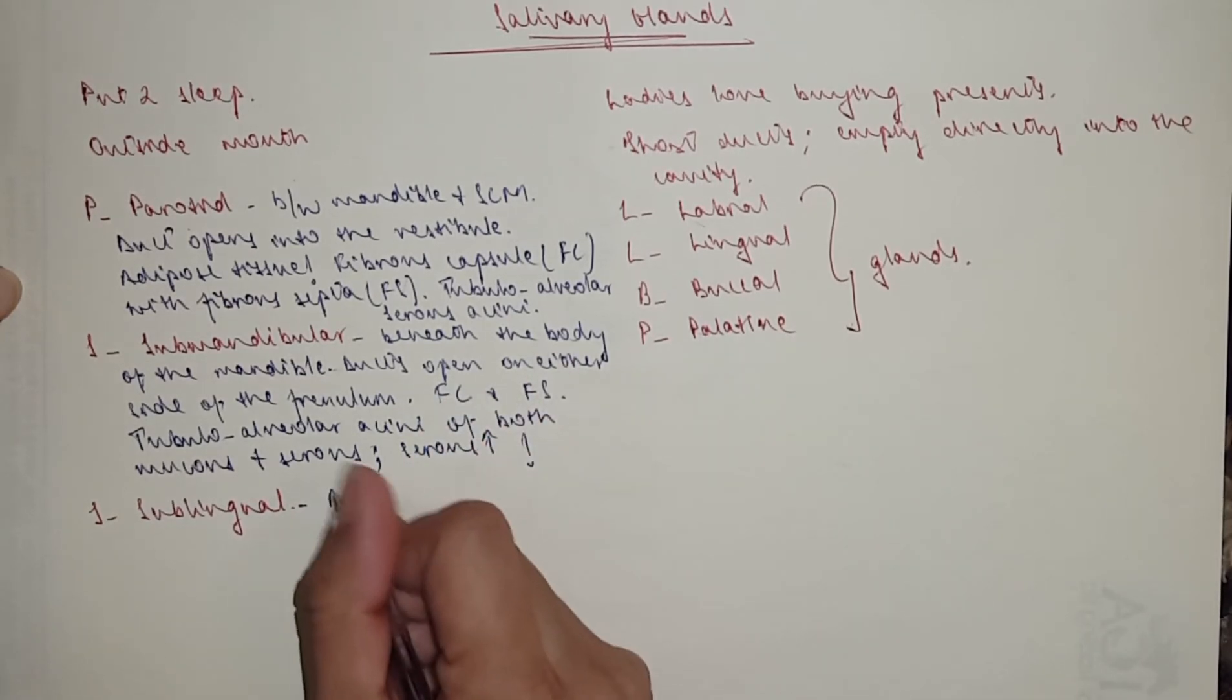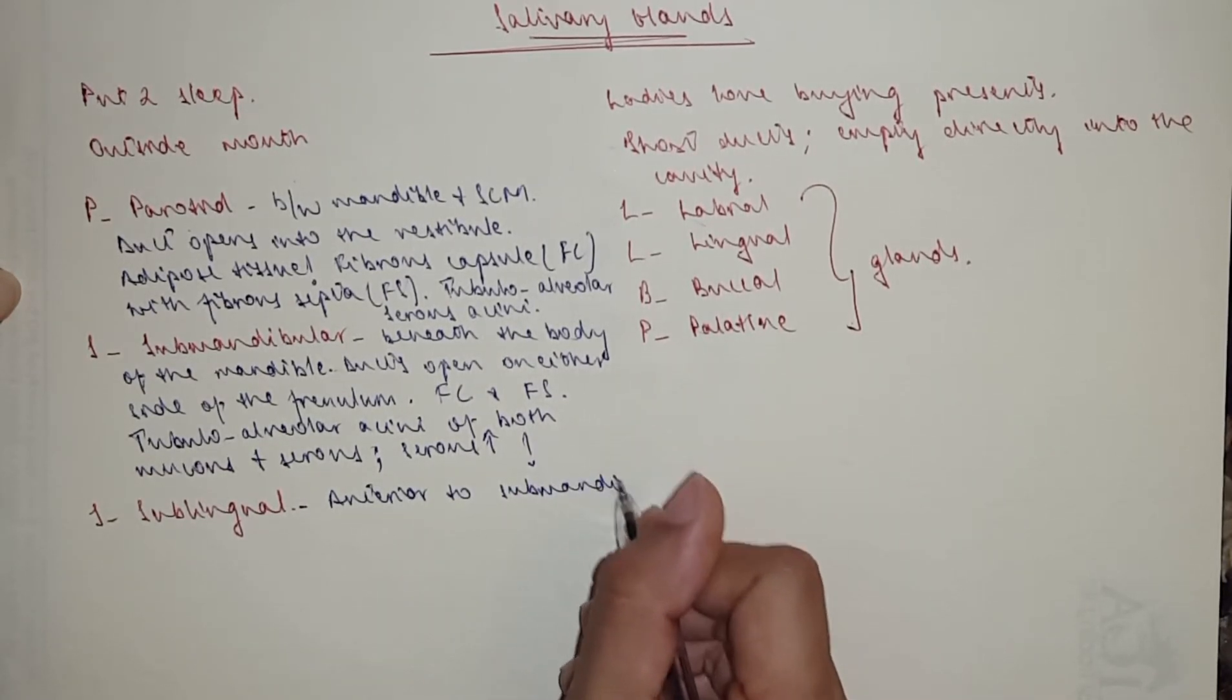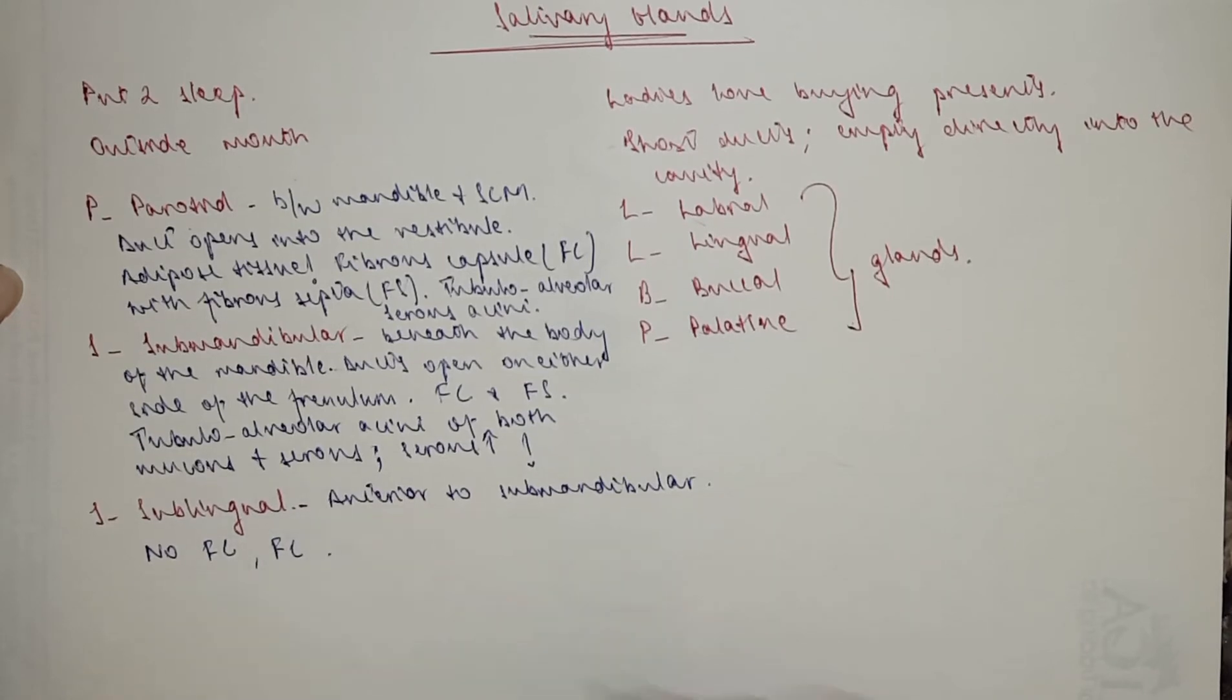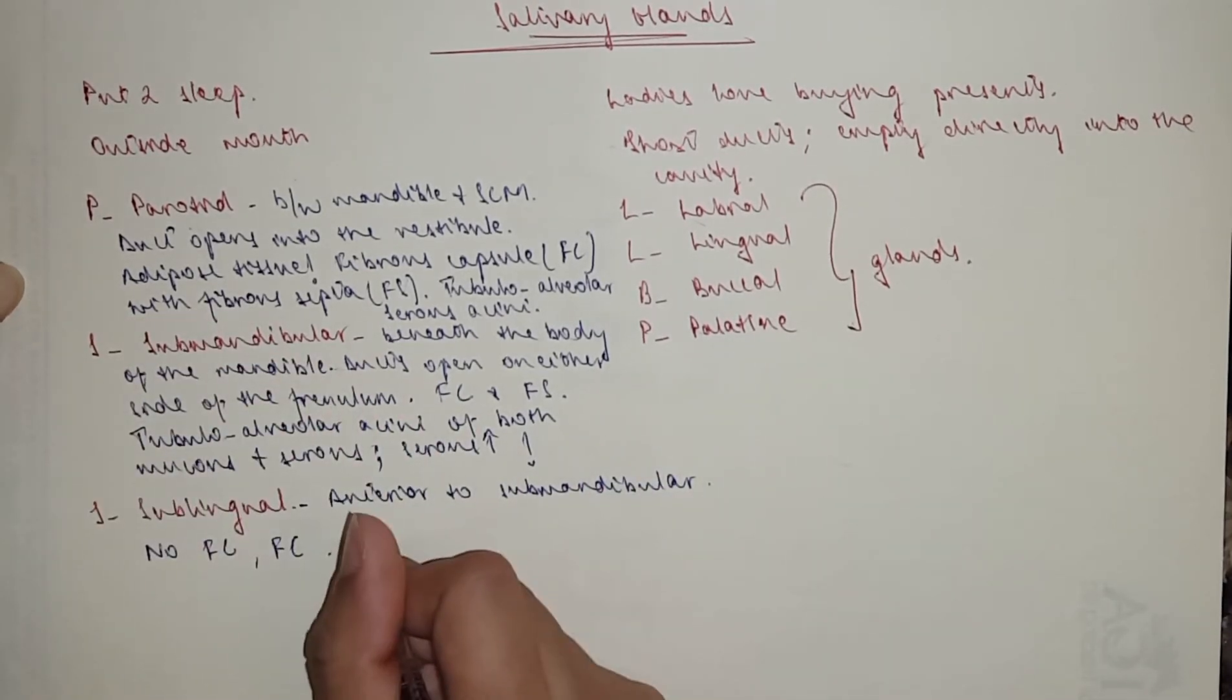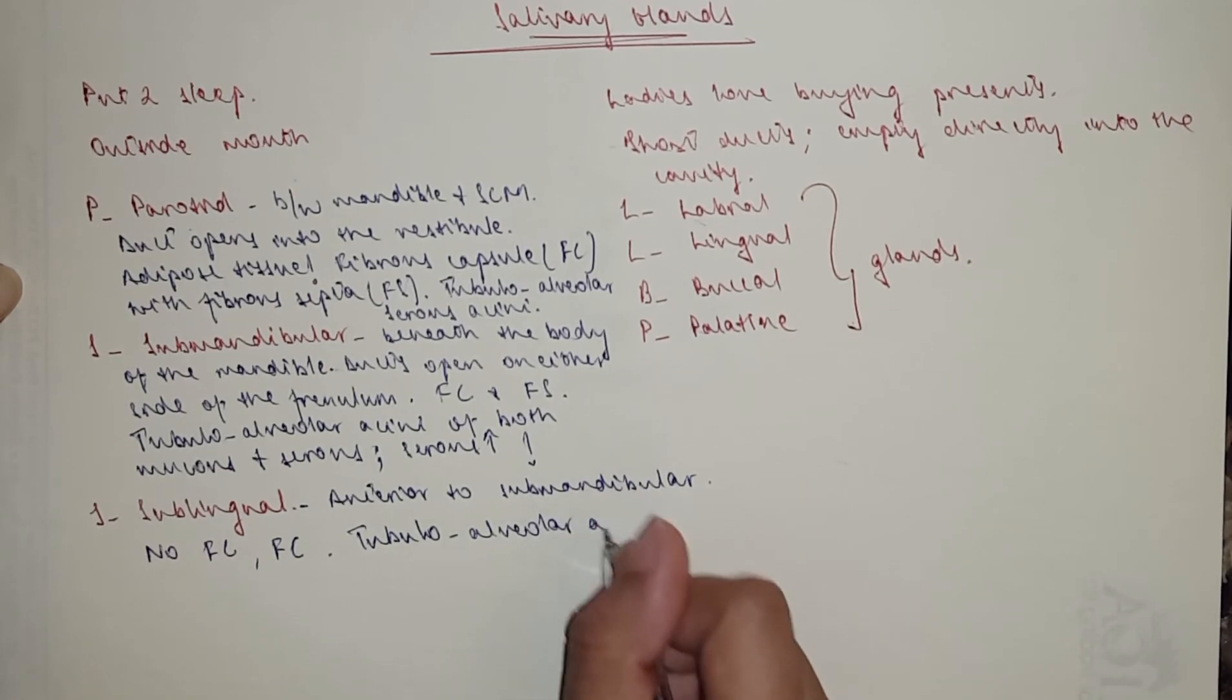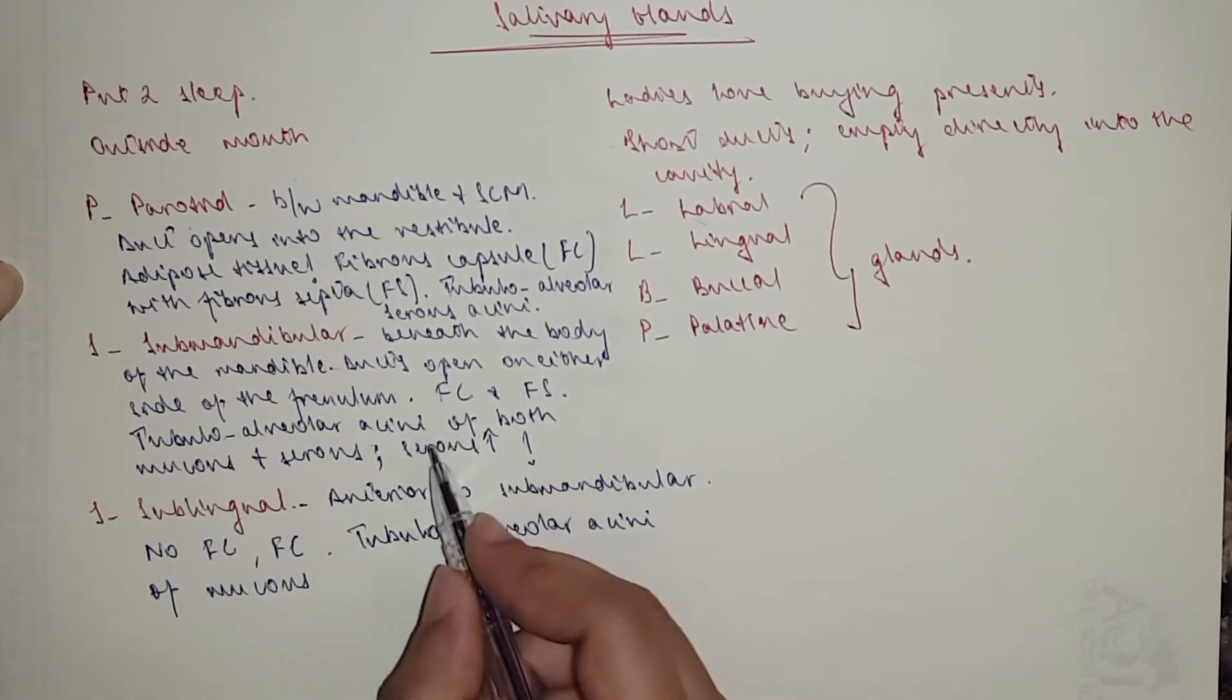So anterior to submandibular, it's got no fibrous capsule, no fibrous septa. It's just got loose connective tissue separating it into lobes and lobules. The ducts are the same, so we've got tubuloacinar acini.